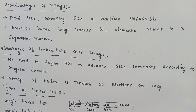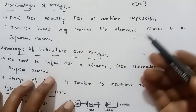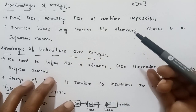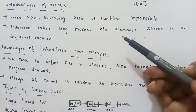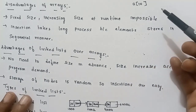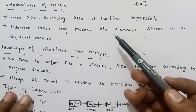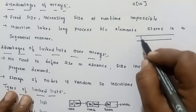This linked list is used to overcome the disadvantages of arrays. First, array is a fixed size — increasing size at runtime is not possible. If you declare an array with a certain size, you cannot increase or decrease it. That means array is static. Second disadvantage: insertion takes a long process because elements are stored in a sequential manner, one after another.